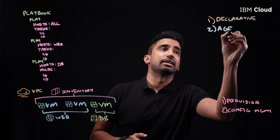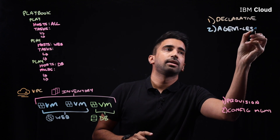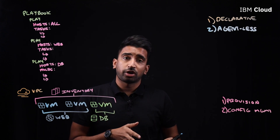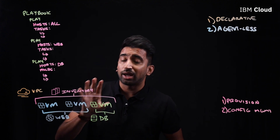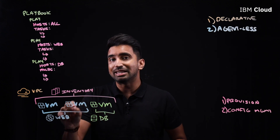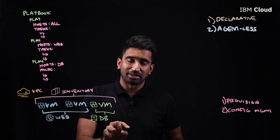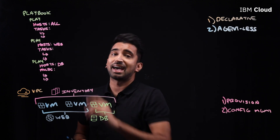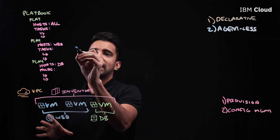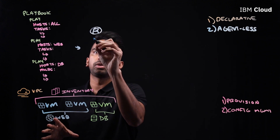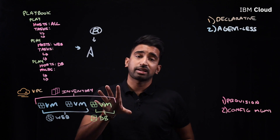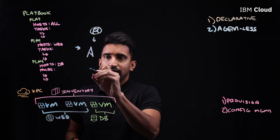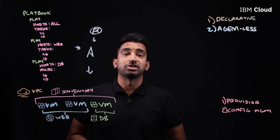That brings me to the second key tenet of Ansible: it's agentless. Unlike many other infrastructure automation tools, you don't actually need to install an agent on the provisioned VMs. Ansible takes advantage of SSH to directly go into those VMs and run the tasks it needs to. We take our playbook, execute Ansible — which runs in most Unix-like environments — and it runs against our virtual machines.